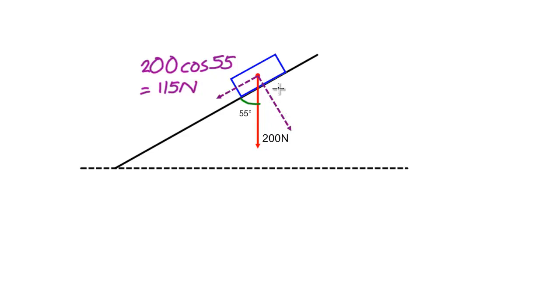Likewise, the component that is acting into the slope, the perpendicular component, is not touching the angle. Therefore, we can say that this one is 200 multiplied by sine 55 degrees, which equals 164 Newtons.